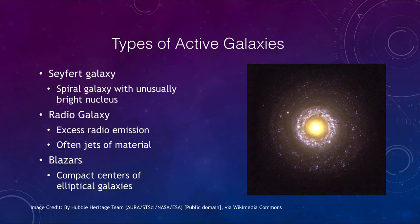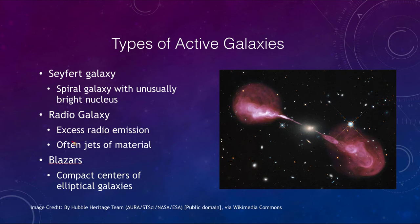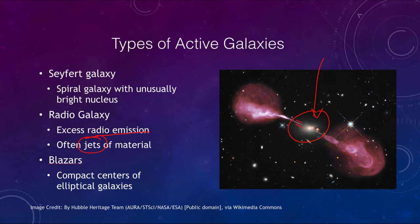Another type is what we call a radio galaxy. As you might expect, these have excess radio emission and often emit jets of material. The galaxy itself sits at the center — what looks like a nice elliptical galaxy — and it emits far more radio emission than a regular elliptical galaxy. It has highly collimated jets of material beaming out in each direction, which then spread out into great radio lobes as they strike the intergalactic medium.